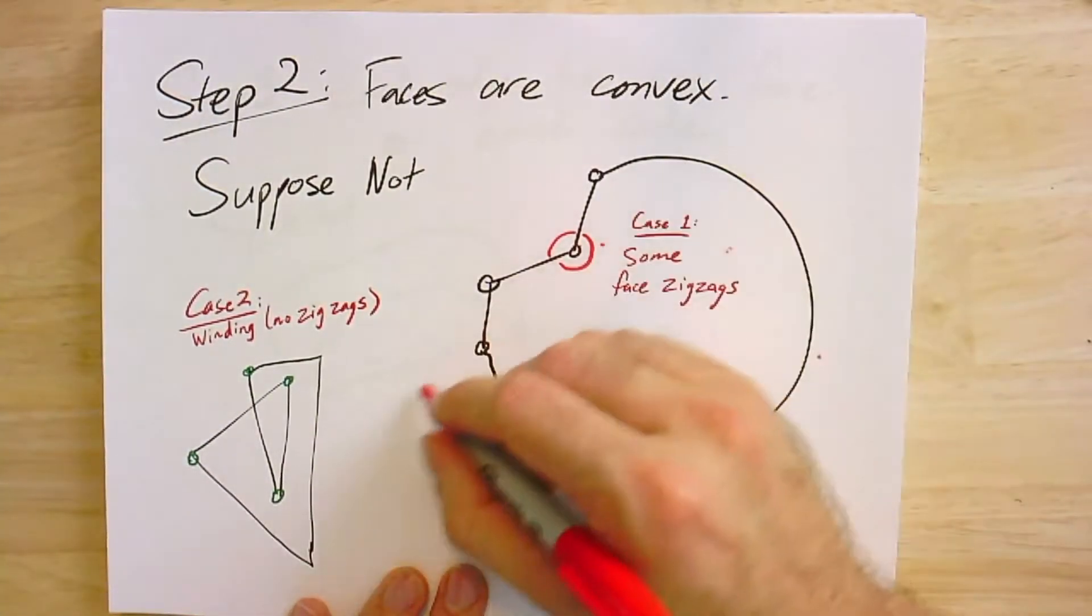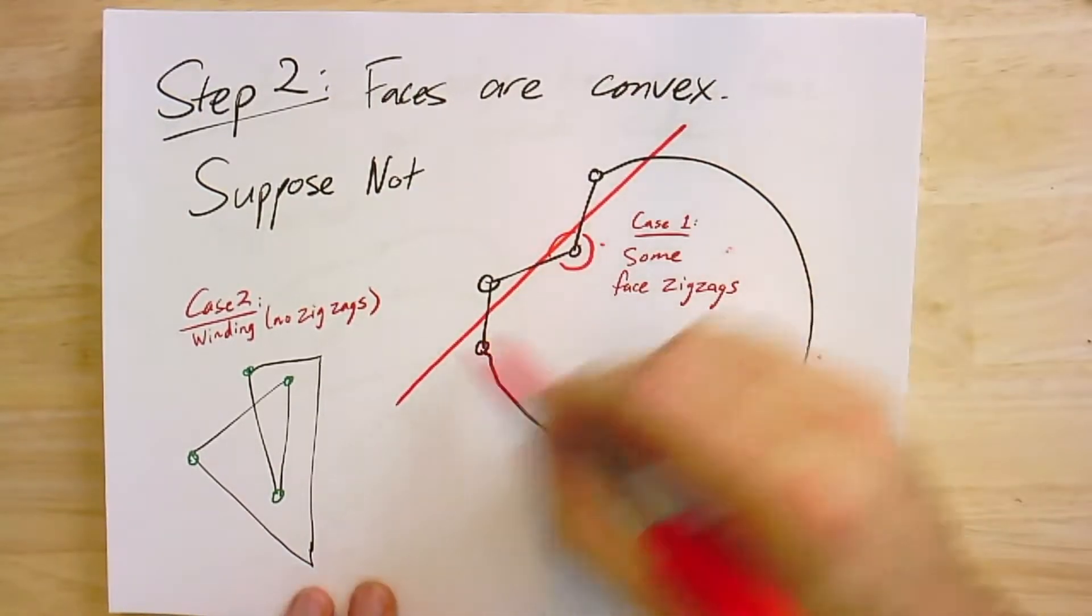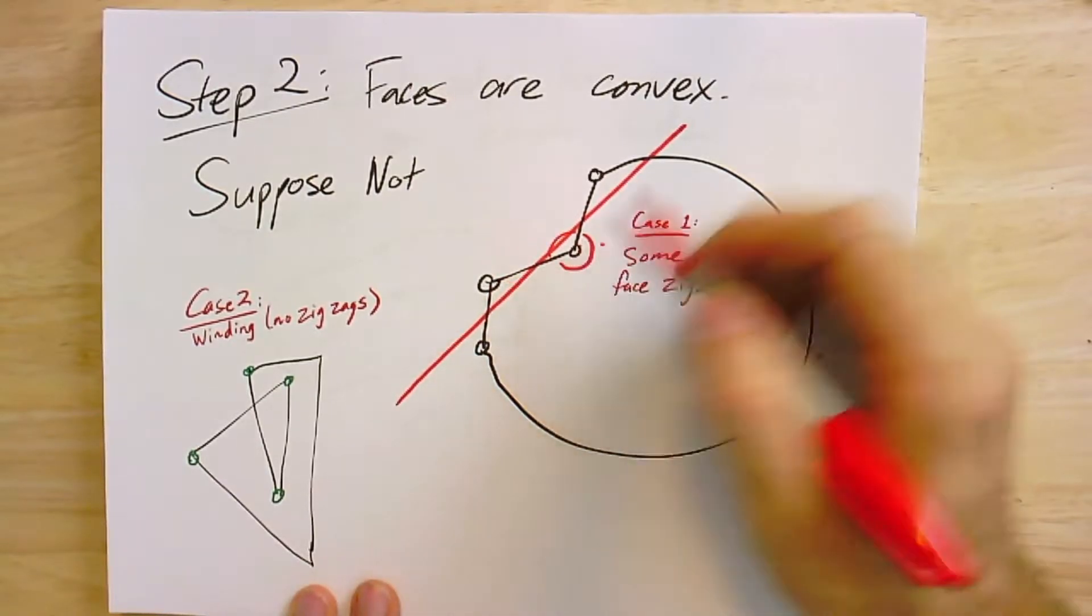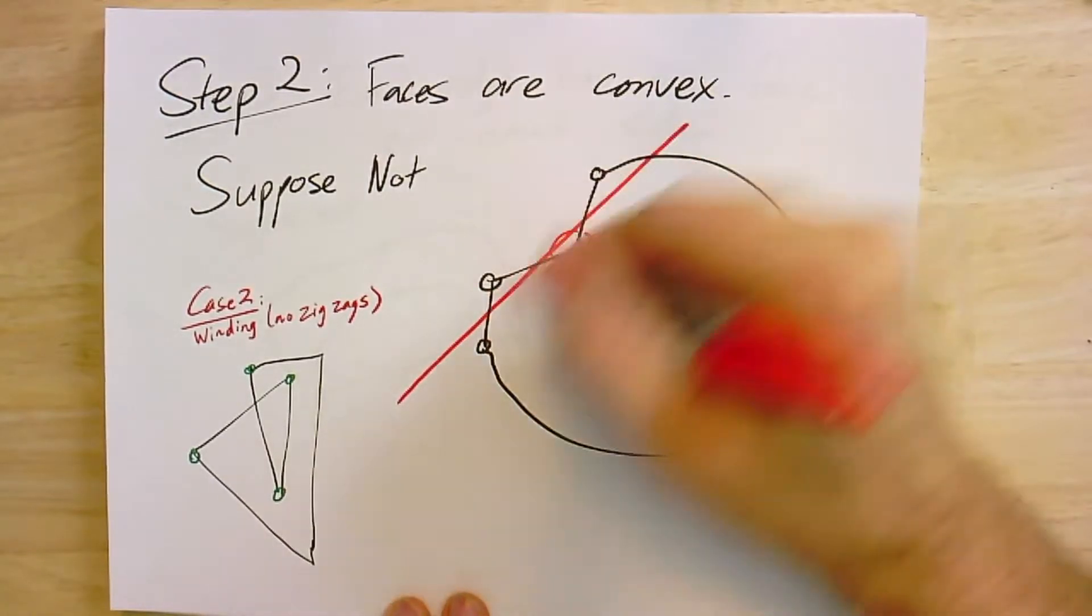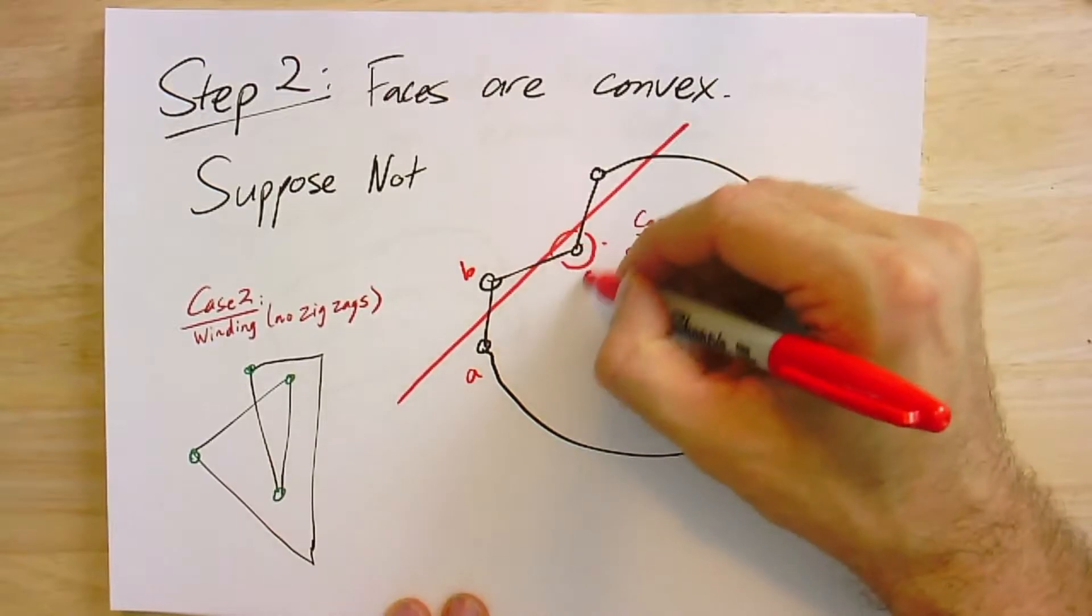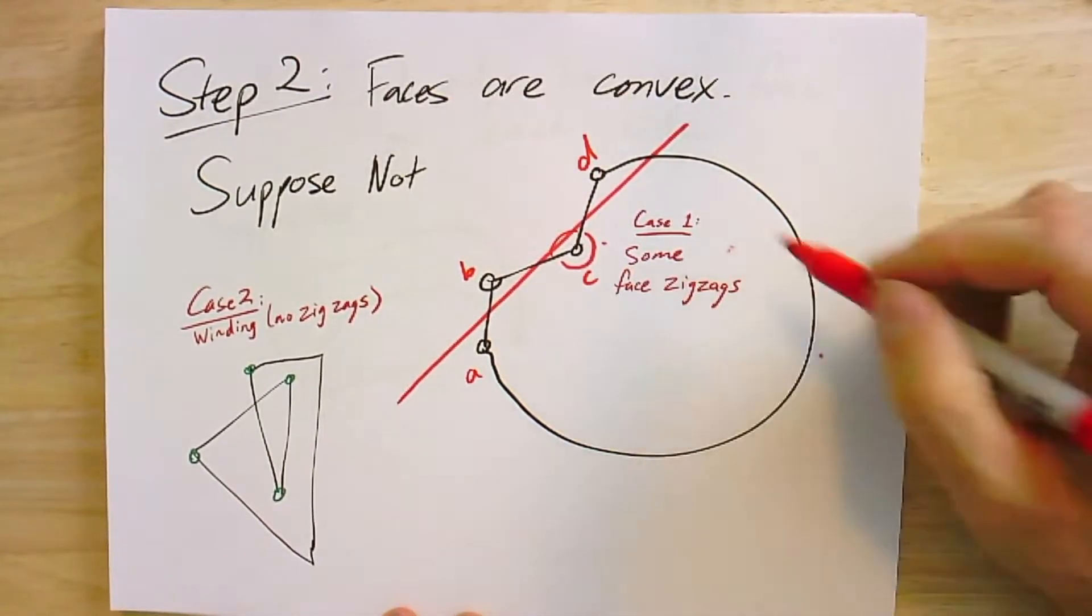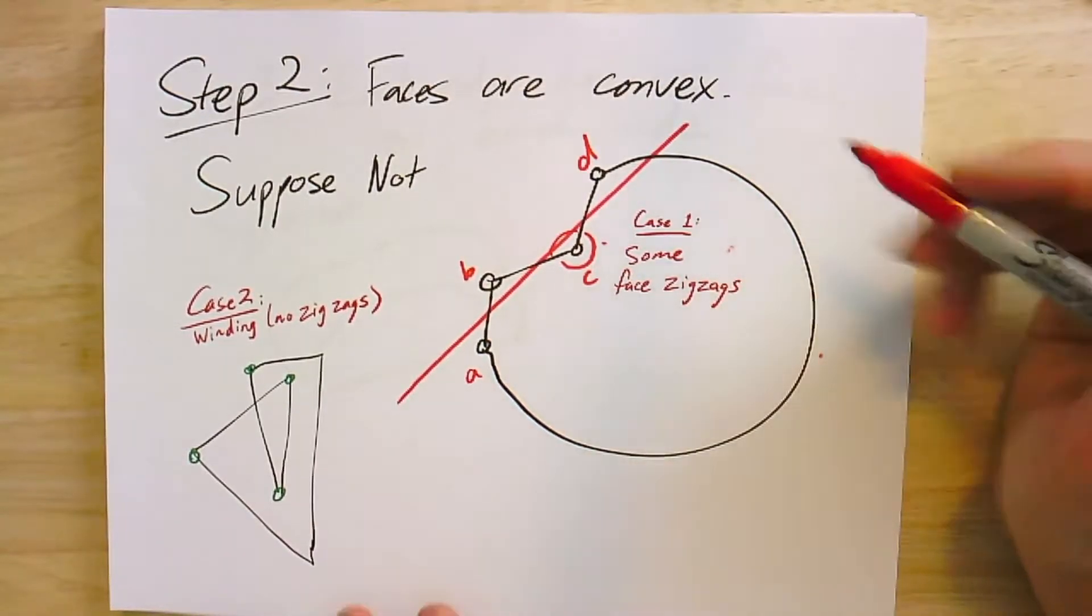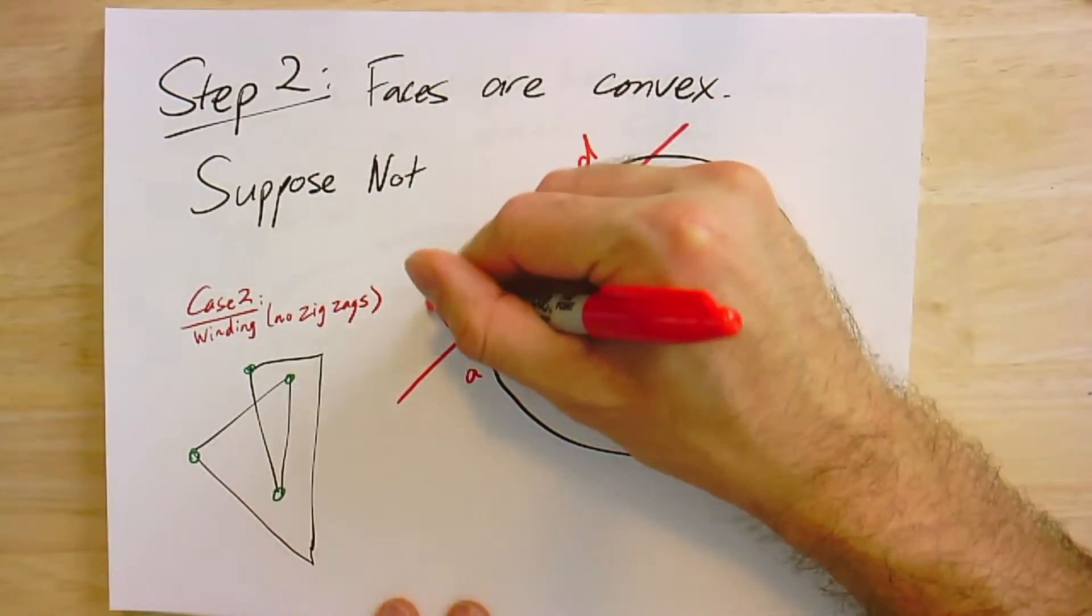I'll draw a line through the zigzag, where I had a convex vertex followed by a reflex vertex. I'll draw this line so it separates out these vertices - A, B, C, D - four vertices in order on the face, with A and C on one side of the line, B and D on the other side. Now I can use my monotone paths.